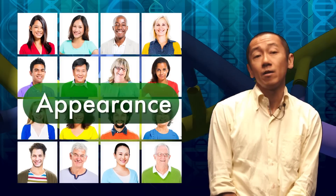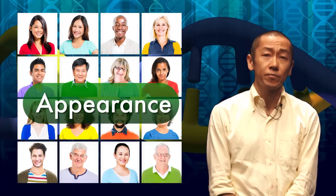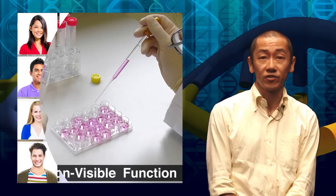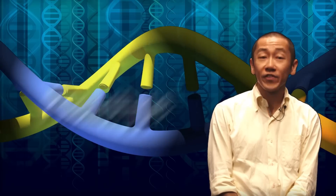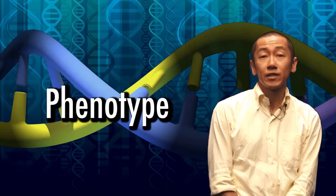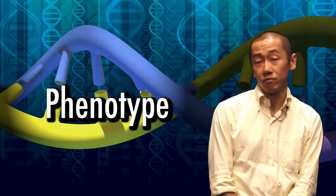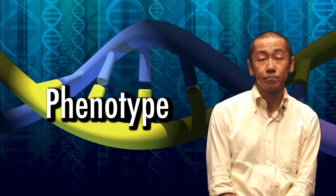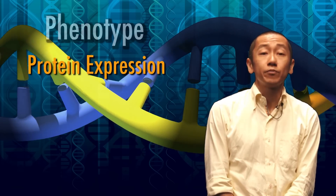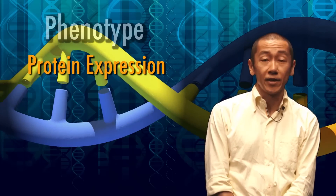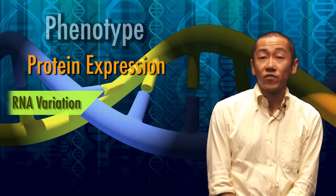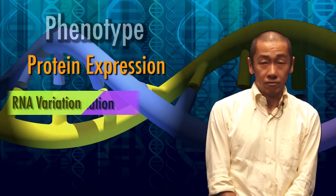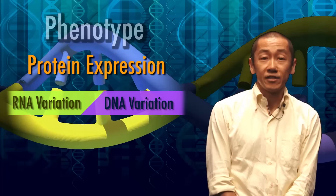We can see variations in appearance, but variation is also present in non-visible functions, and all these features are called phenotypes. These phenotypic variations are rooted to various patterns of protein expression, and protein variation is based on variation in RNA expression, and RNA variations are linked to DNA sequence variation.